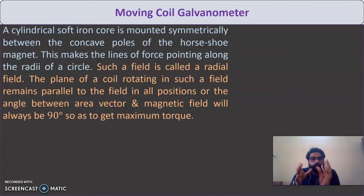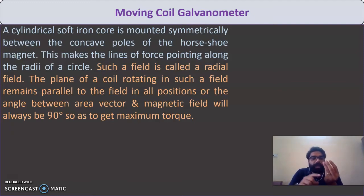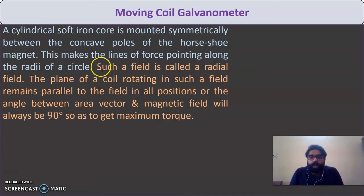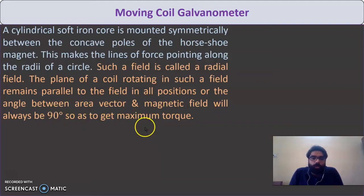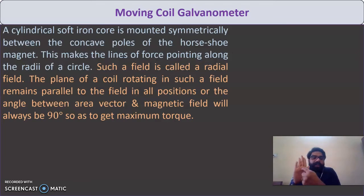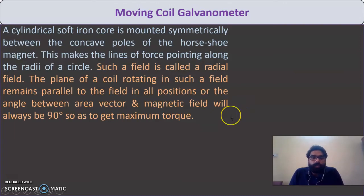Such a field is called a radial field. We use the radial field so that the plane of the coil remains always parallel to the field in all positions, meaning the angle between the area vector and the magnetic field is always 90 degrees — giving maximum torque. The torque formula is τ = NBA sin θ, and for maximum torque θ = 90°.